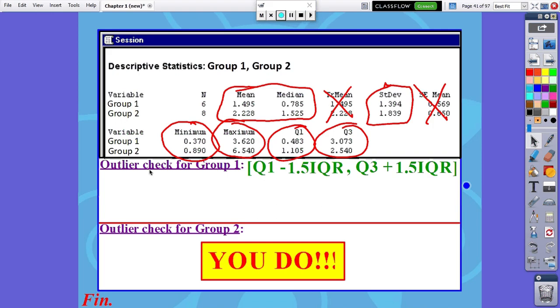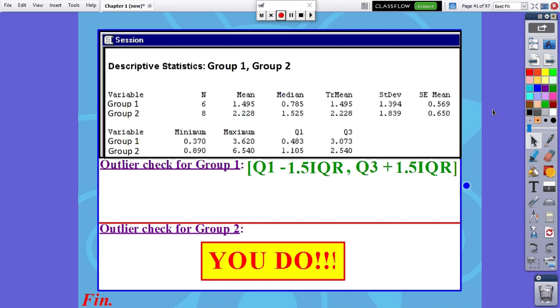What I'm going to do is we're going to check for outliers with group one, with those six values. And then I'm going to have you guys check for outliers with group two. So Q1 for group one is this 0.483. I need to subtract away 1.5 IQRs. Remember an IQR was just Q3 minus Q1. Q3 was 3.073, Q1 is 0.483. If I calculate the IQR, then that difference is 2.59. I don't want to just subtract away one IQR, I want to subtract away 1.5 IQRs.